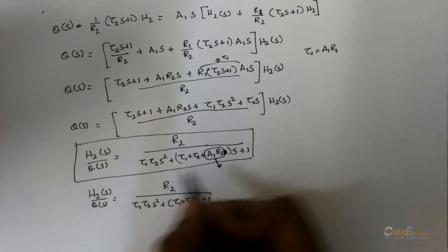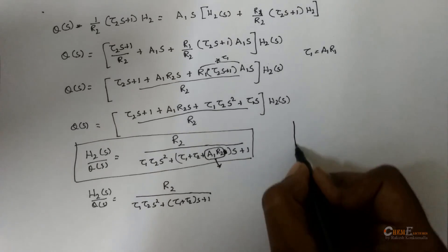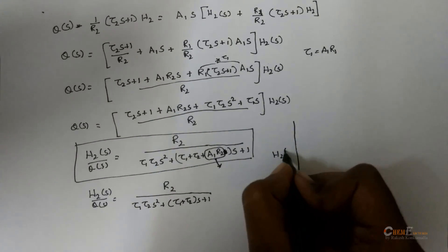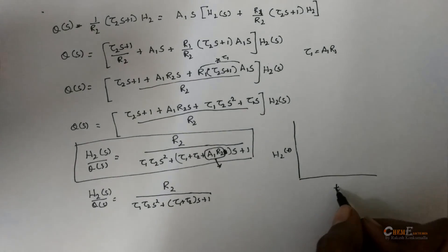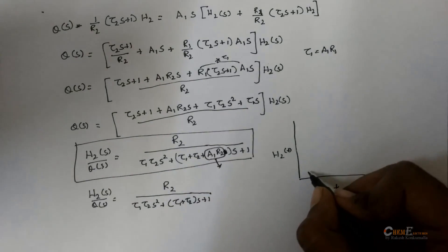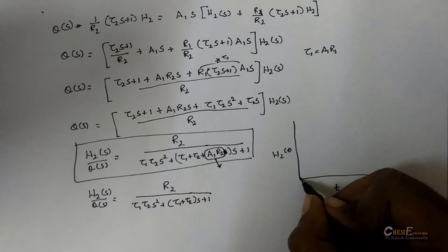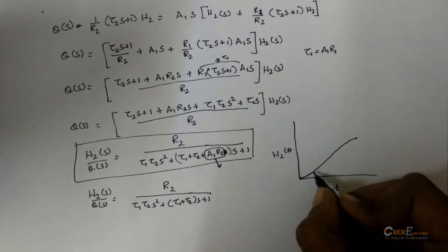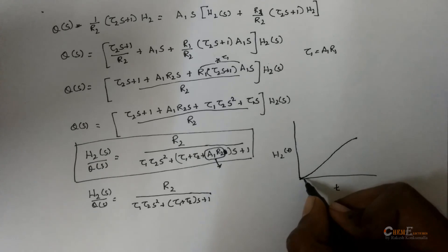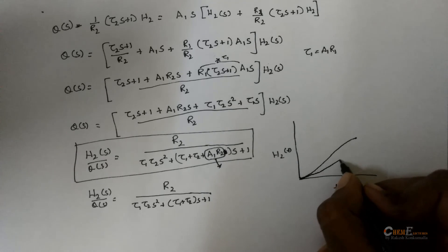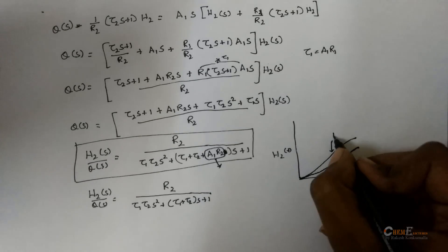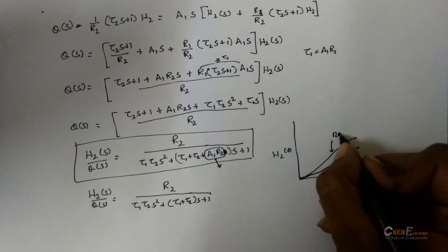If you plot the response H2 versus t, the non-interacting system responds faster, while the interacting system has a more sluggish response with a delay compared to the non-interacting system.